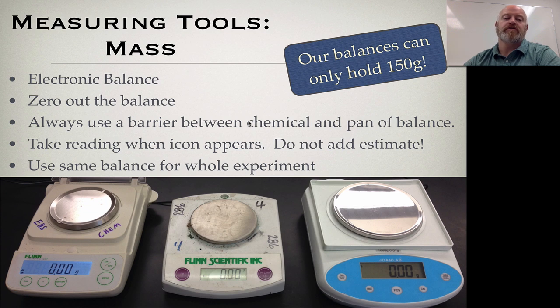Once you get ready to use a balance, always use some sort of barrier. So use a measuring cup, use a little beaker, use a piece of paper, something where you're not putting chemical directly on the pans of our balances. So we don't ever want to make that contact between chemical and the pans, because these are just metal and they could chemically react. Take a reading when the icon appears. We have very precise balances in our room. They measure out to one one-hundredth of a gram or basically a centigram, which means that if a person walks by as you measure something, it actually can vary the mass just by the air pressure and the air currents that go by it.